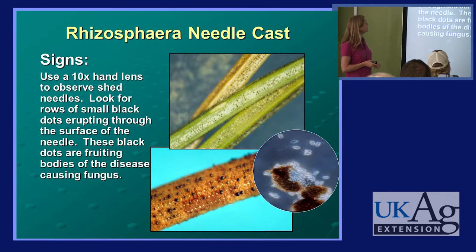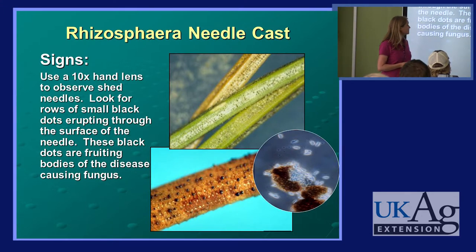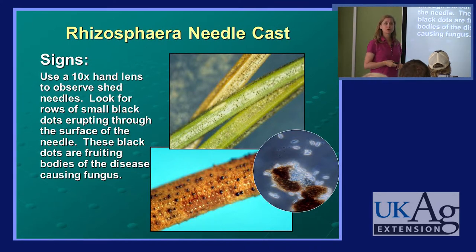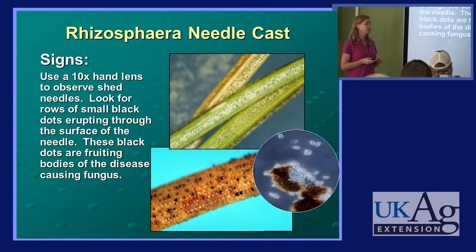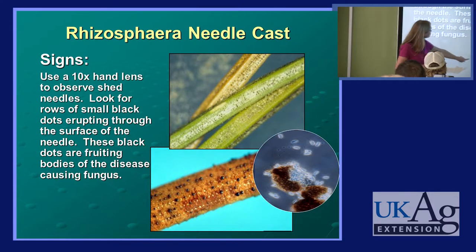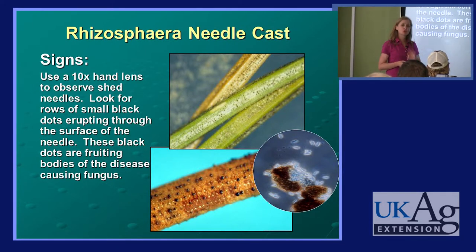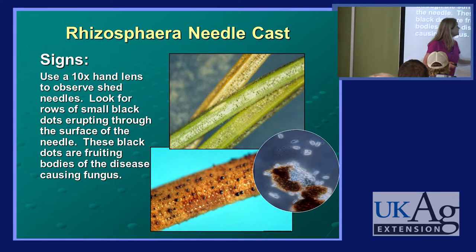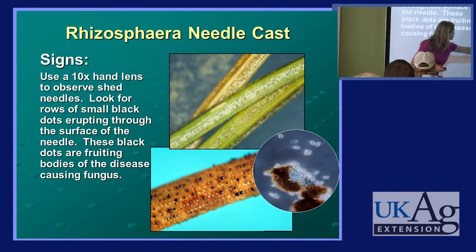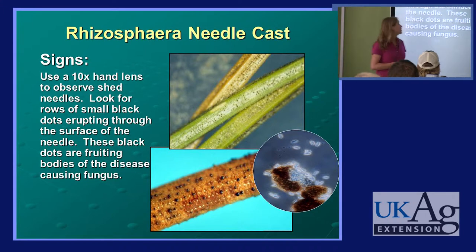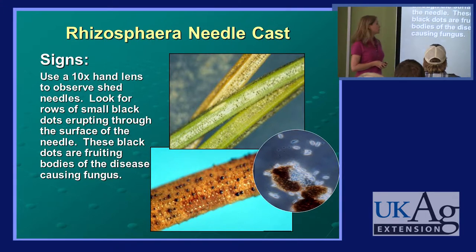With a hand lens, this is the same needle cast disease we see on spruces — I've seen lots of it in landscapes, and for several years we've been seeing a lot of it. If you look closely at individual needles using a hand lens, ProScope, or some kind of magnifier, you'll probably be able to see little black structures along the needle, which indicate that's the fungal disease. In the laboratory, we confirm it using a regular microscope.